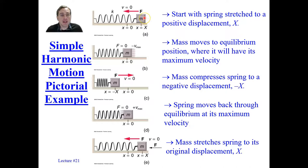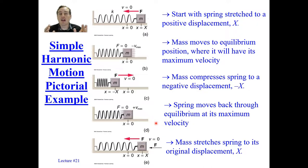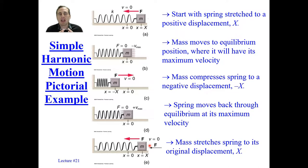Each step from one snapshot to the next requires a quarter of a period of time — T divided by four. You can imagine the time is fixed when we look at each of these snapshots of the mass's motion. This is simple harmonic motion in the absence of friction, damping, or air resistance.